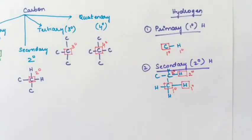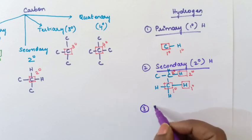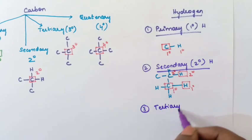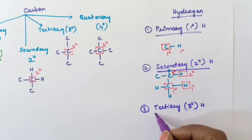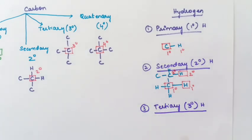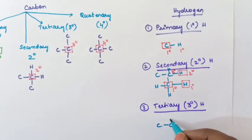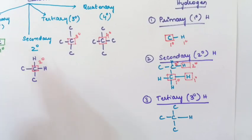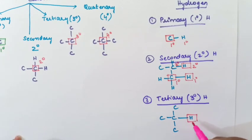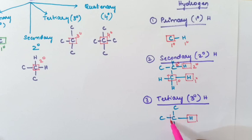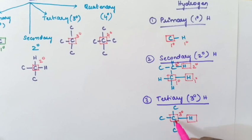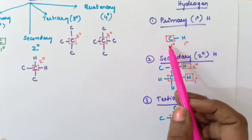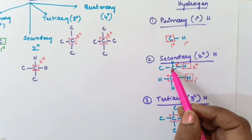Next is tertiary hydrogen. For example, checking this hydrogen — it is connected to a tertiary carbon, so this is called as tertiary hydrogen. So remember: primary hydrogen is connected to primary carbon, secondary hydrogen is connected to secondary carbon, and tertiary hydrogen is connected to tertiary carbon.